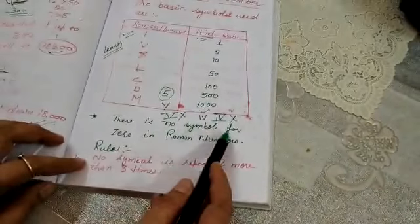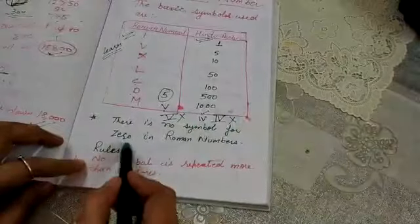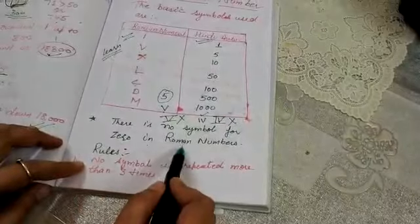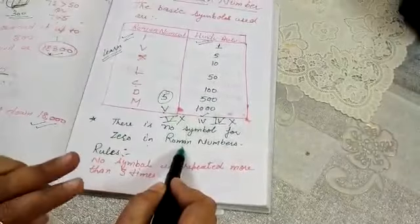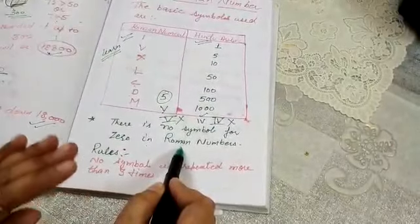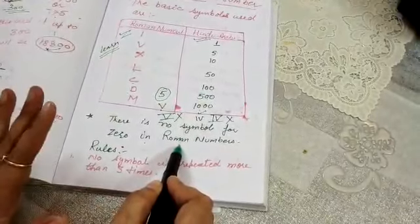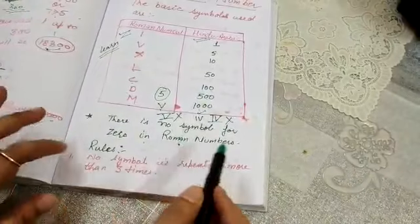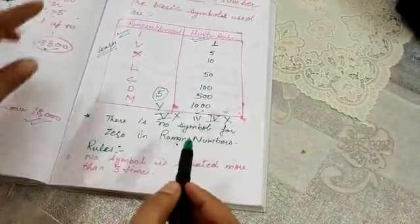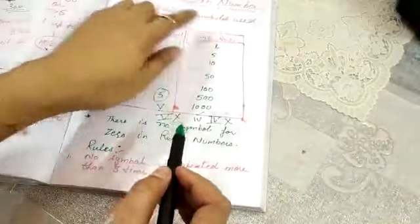There is no symbol for 0 in Roman numbers. In Roman numbers we do not use any symbol for 0. So now let's look at the rules for Roman numbers.